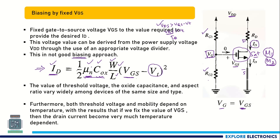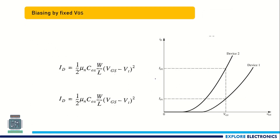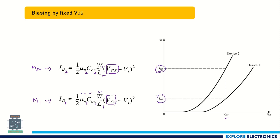We need to bias the device such that even with variations in μn, COx, or W/L, the operating region should not change — meaning ID should be constant for a given VGS. For two different devices with fixed VGS, VGS is constant, but we will get two different drain currents: ID1 based on μn1, COx1, and W/L1 for MOSFET 1, and ID2 based on μn2, COx2, and W/L2 for MOSFET 2. We need to avoid this.